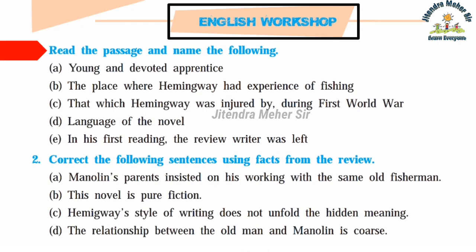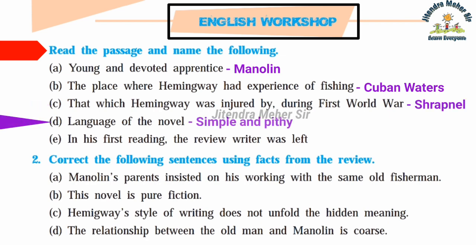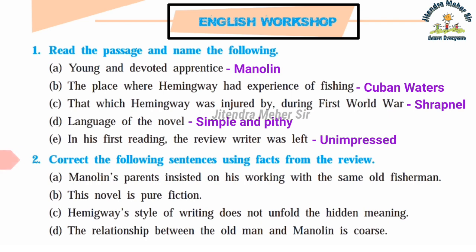English Workshop, activity one: Read the passage and name the following. A: Young and devoted apprentice — it was Manolin. B: The place where Hemingway had experience of fishing — in the Cuban waters. C: That which Hemingway was injured by during the First World War — it was shrapnel. D: The language of the novel — it is simple and pithy. E: In his first reading, the review writer was left unimpressed.